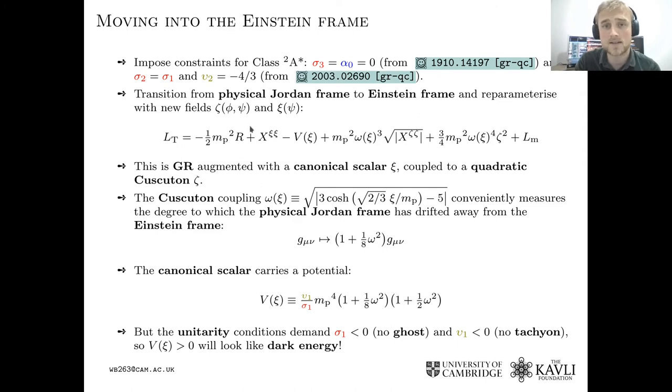So then it turns out in the Einstein frame, we just have general relativity, plus a canonical z field, plus a non-canonical zeta field, which is a quadratic cuscuton, and it's weighted by this omega of z function. Omega of z actually happens to be the difference between the conformal Einstein and Jordan frames, which is quite convenient. The potential of the canonical field is positive definite, and that's fixed by the unitarity conditions that we got from QFT earlier. Because of that, we know that generically, it's going to act as if it's boosting the cosmological constant in the theory. It's going to act as a dark energy term.